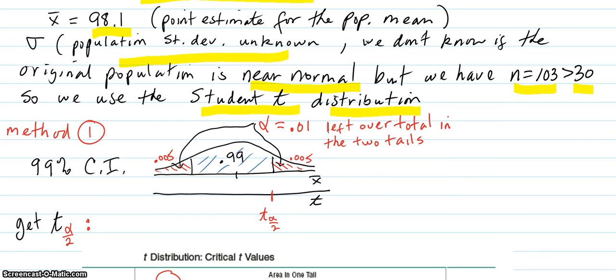Method one. We're going to draw a picture. I always should draw a picture. A picture of the 99% confidence interval is you have your bell-shaped curve here of sample means, not the original data, the sample means.